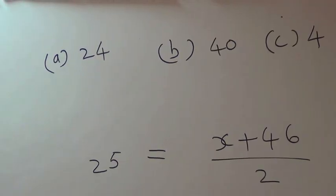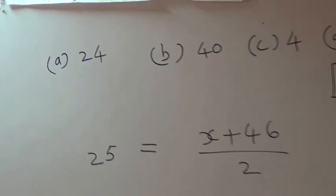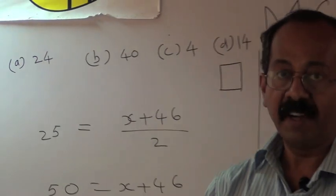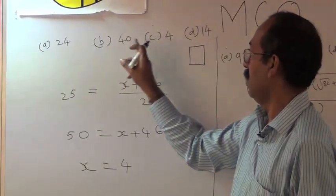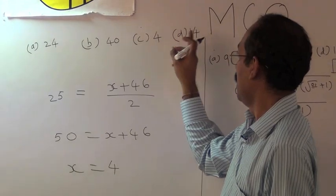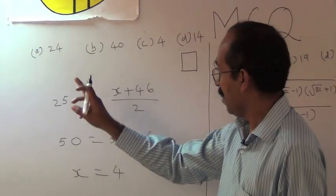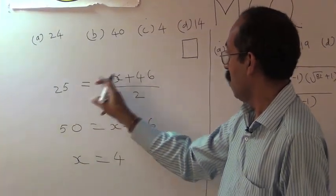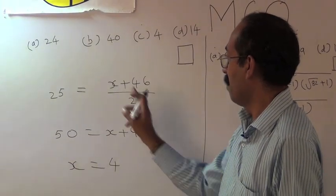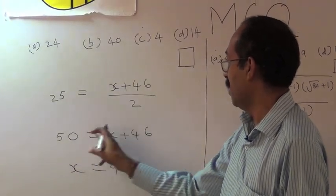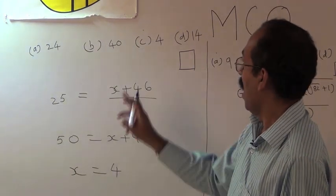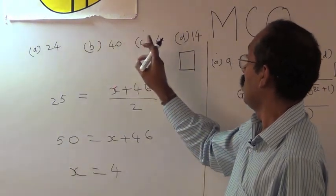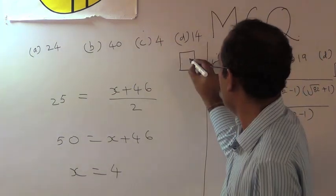Next example: if 25 is the arithmetic mean between x and 46, find x. The alternatives are a) 24, b) 40, c) 4, d) 14. Arithmetic mean: 25 = (x + 46) / 2. After multiplying by 2, we get 50 = x + 46, so x = 4. Alternative c represents 4, so c is the correct alternative.